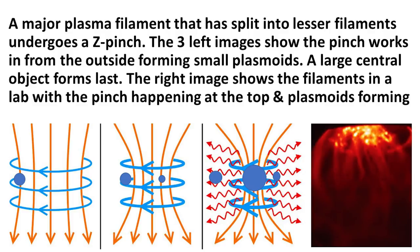A major filament that is split into lesser filaments can also undergo a Z-pinch or Bennett pinch. The three left images show how the pinch works in from the outside forming small plasmoids or spinning balls. The large central object forms last. This core object is under so much electric and magnetic pressure that it goes into arc mode and lights up, and a star is born. The right-hand image shows a major filament undergoing a Z-pinch, with bright points showing the small plasmoids forming. There are even sub-filaments around the lesser filaments. So this model not only explains the planets but many of their moons as well.